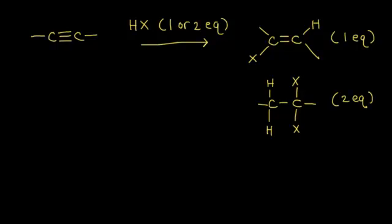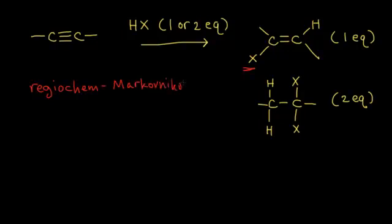Let's look at the hydrohalogenation reaction of alkynes. We've seen this reaction before with alkenes, and there are some similarities and some differences. We start with our alkyne, our triple bond, and we add our hydrogen halide — either one or two molar equivalents. If we add one equivalent, the hydrogen and the halogen add from opposite sides, and the halogen adds to the most substituted carbon. In terms of regiochemistry, that's called Markovnikov's rule. With two molar equivalents, you end up with two halogens on the same carbon.